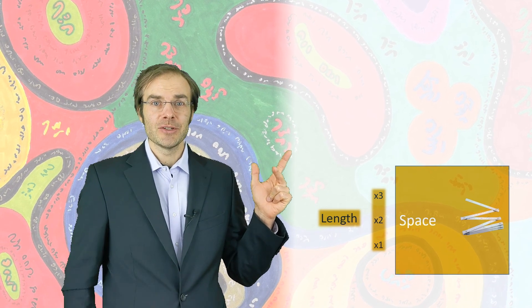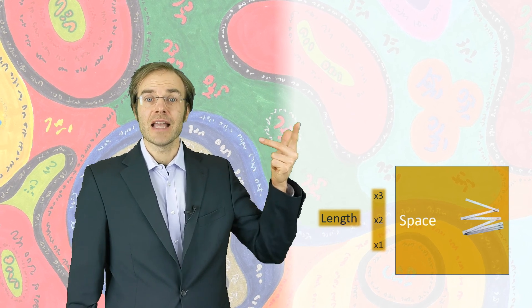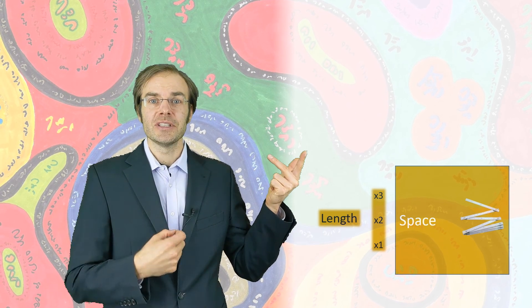Space is isotropic. That means you can rotate your three-coordinate axis as you like. Space has the same properties in all directions.